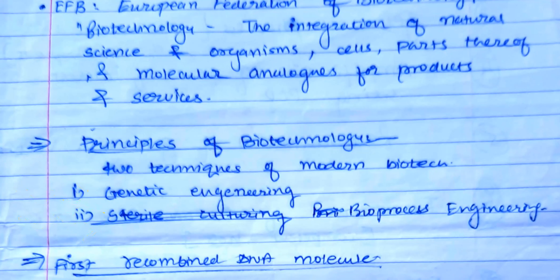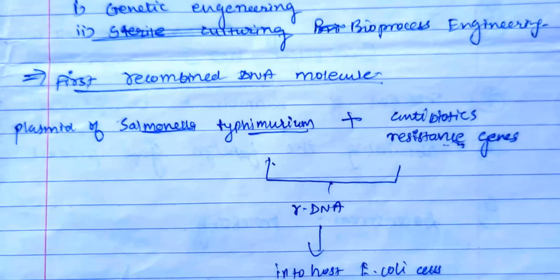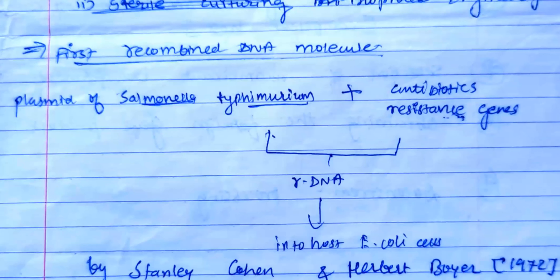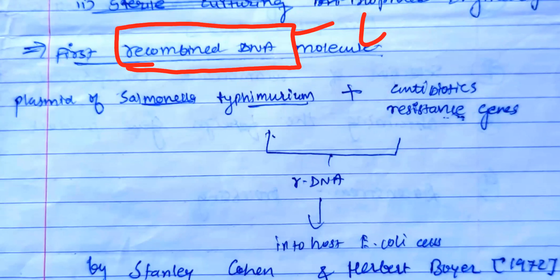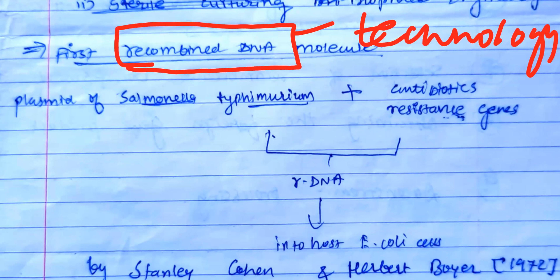Under genetic engineering, there are different types of applications. One of the most important is called recombinant DNA technology. If biotechnology is the science, genetic engineering is one field under it, and within genetic engineering, one key technique is recombinant DNA technology — involving recombination of DNA. This chapter is dedicated to recombinant DNA technology.